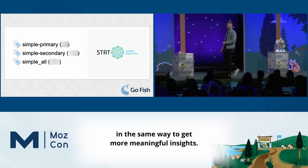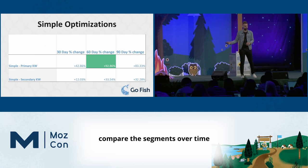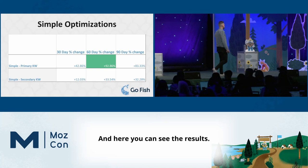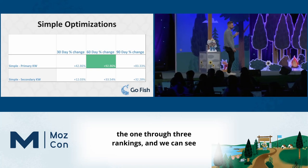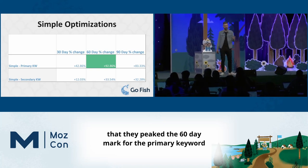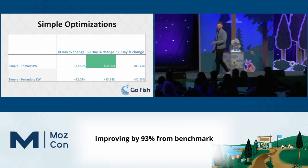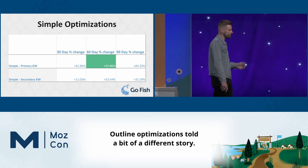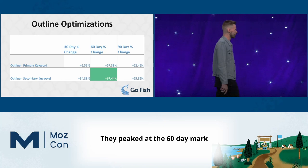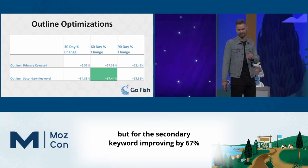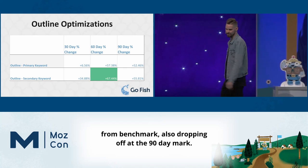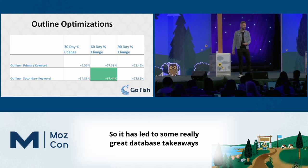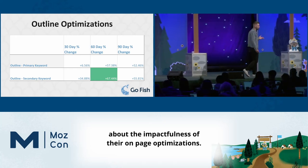We were then able to compare the segments over time and analyze how they all performed against each other. Here are the results: the simple optimizations for positions 1–3 peaked at the 60-day mark for the primary keyword, improving by 93% from benchmark, then dropping off at the 90-day mark. The outline optimizations told a different story — they peaked at the 60-day mark but for the secondary keyword, improving by 67% from benchmark, also dropping off at the 90-day mark. This led to some really great data-based takeaways for the client.